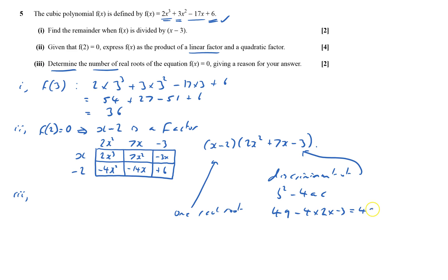49 plus 24, which equals 73, which is greater than 0. Therefore 2 real roots here, therefore 3 real roots all together. And that's problem 5 done.